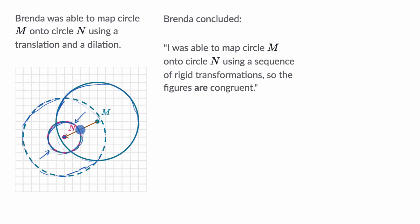All right, so that all seems right. Now Brenda concluded, I was able to map circle M onto circle N using a sequence of rigid transformations. So the figures are congruent. All right, so is she correct?